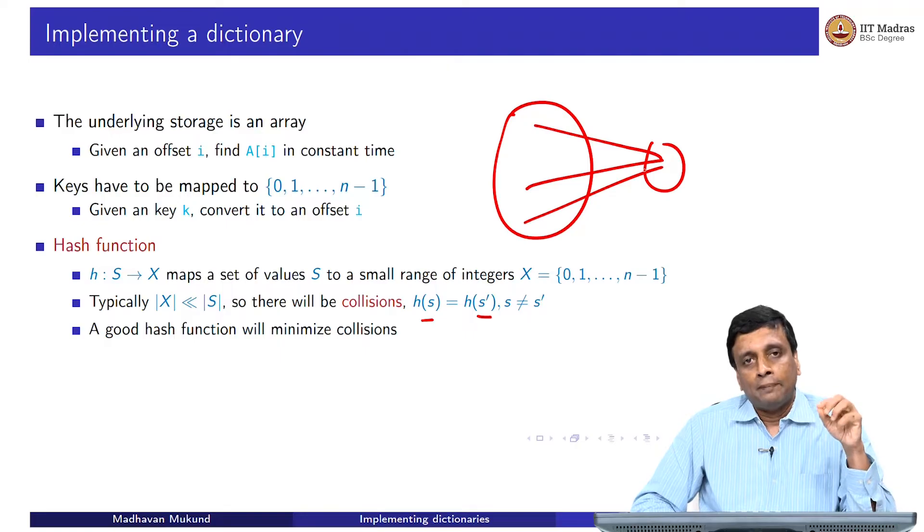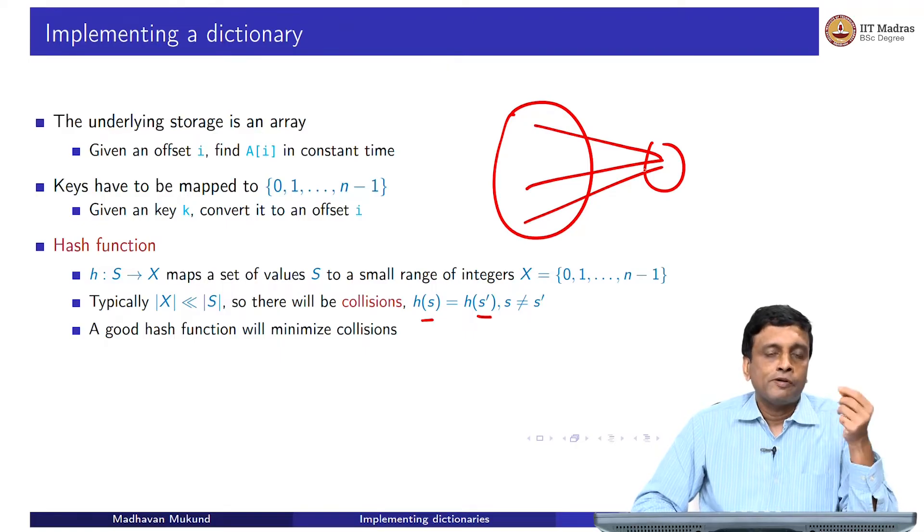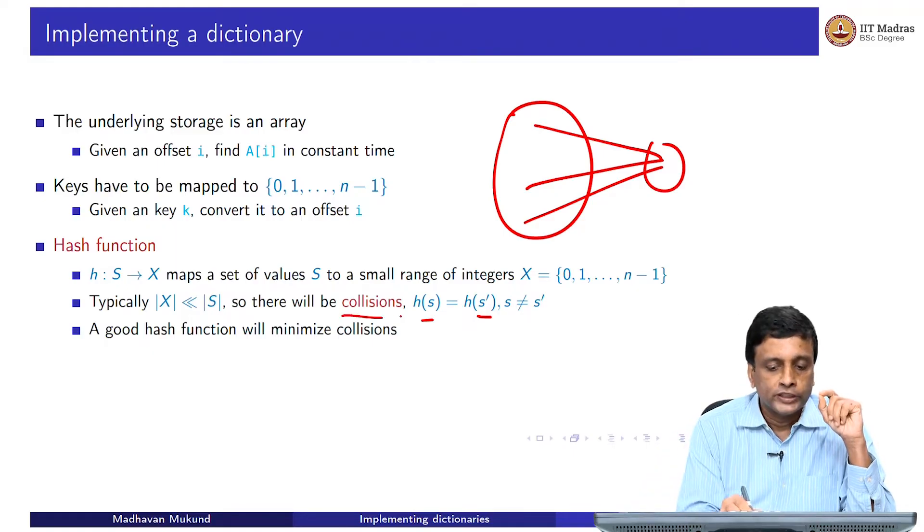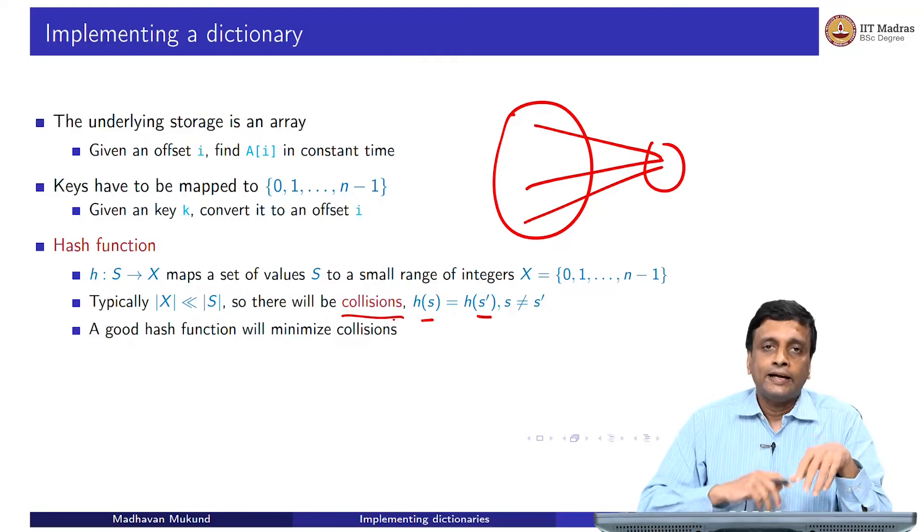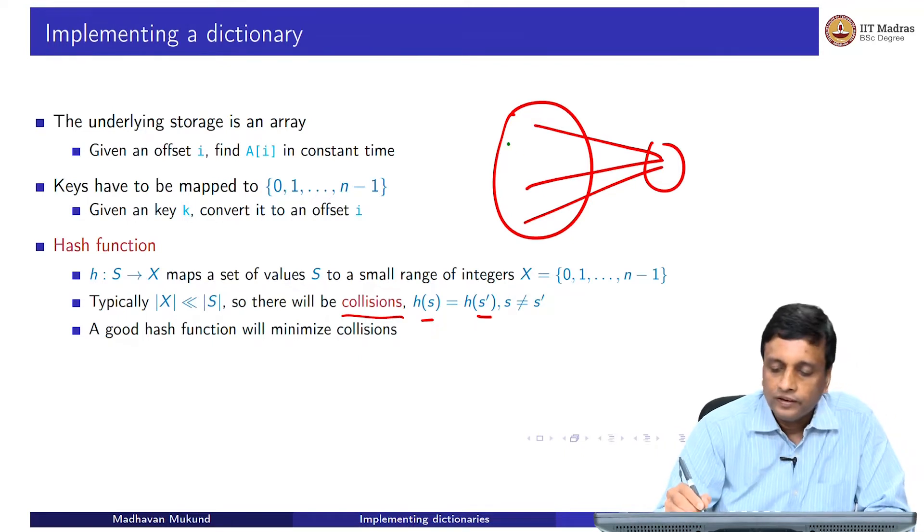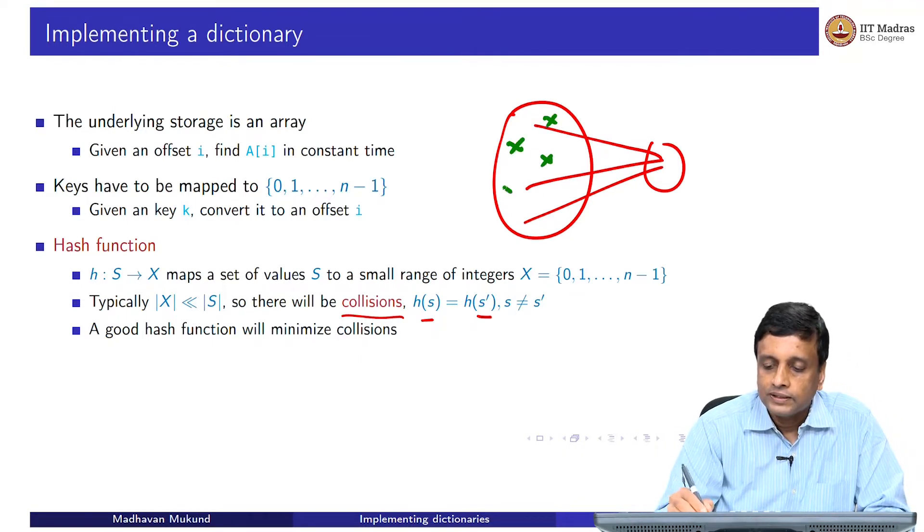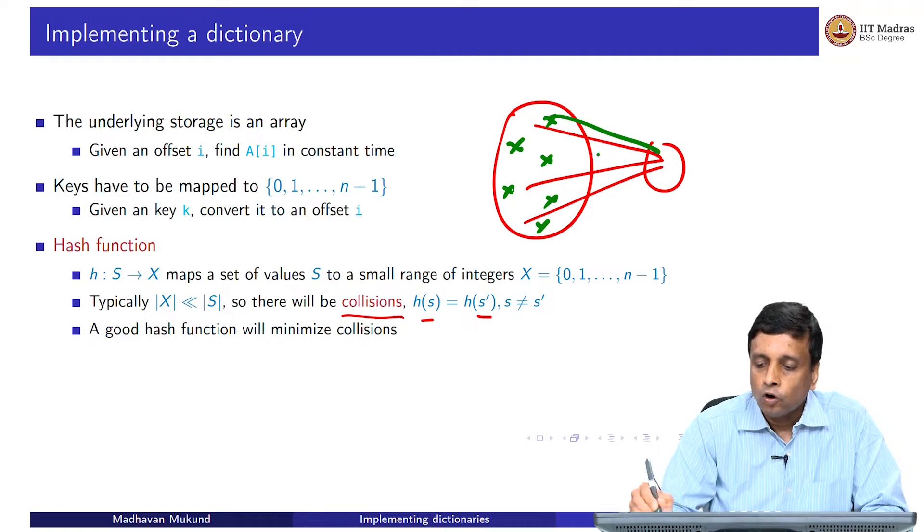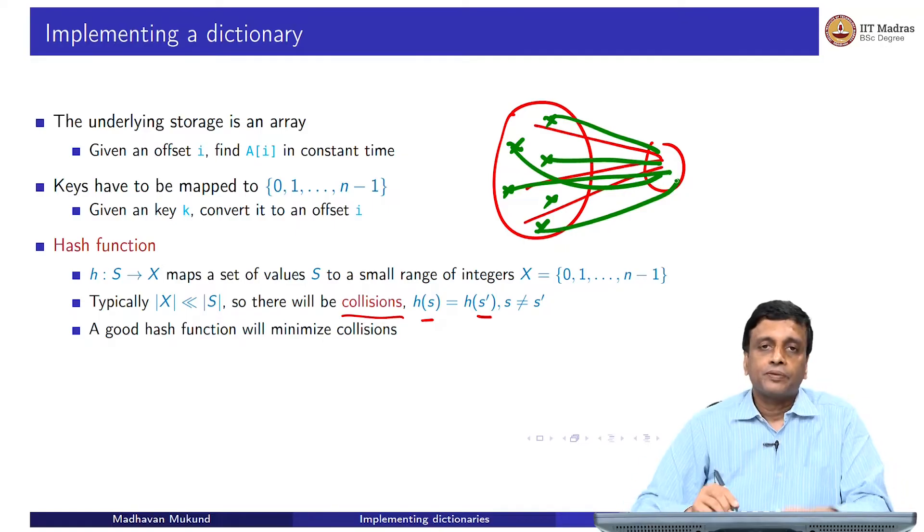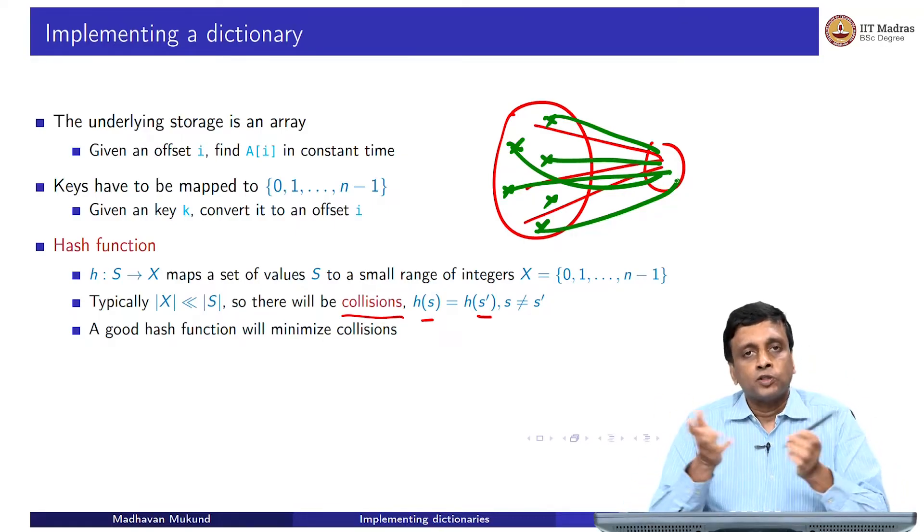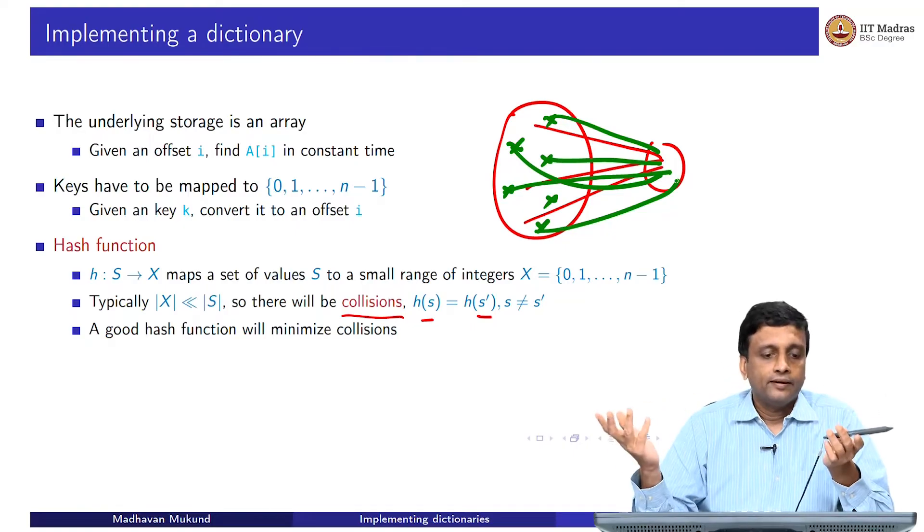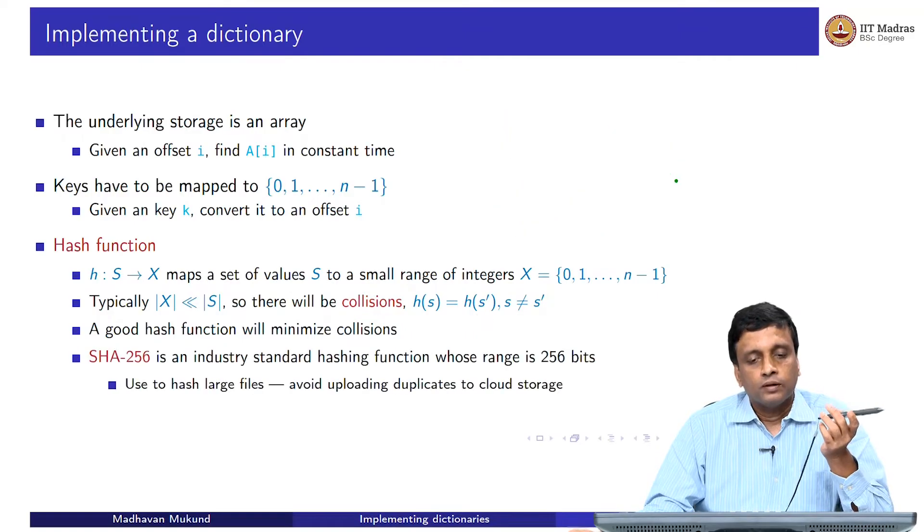But what you would like to do is to somehow distribute this so that it is random. It should not be that if I map a name and if I map the next name or if I map a roll number and I map the next roll number, the next roll number will go and collide. I would like to distribute so that if I give you a random set of elements from here, which are kind of spaced out, hopefully, they will all go to different things. This is what you would like, you cannot guarantee it, but you would like this to happen. If I give you a random collection of inputs from the large set, then with reasonable chance, they should not collide. This is what a good hash function will do.